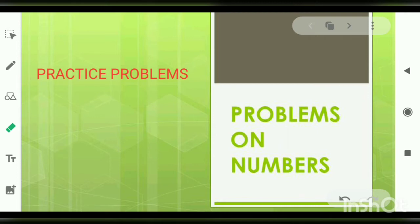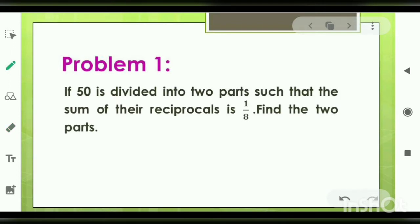Let's read the very first question. If 50 is divided into two parts such that the sum of their reciprocals is 1 by 8, find the two parts.